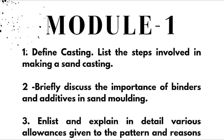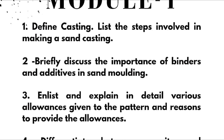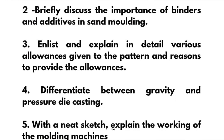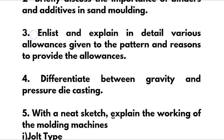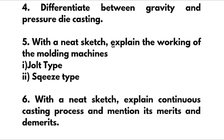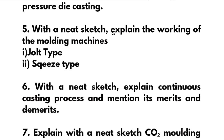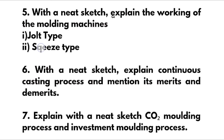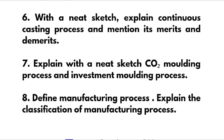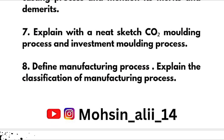In Module 1, we have: define casting and list the steps involved in making a sand casting; briefly discuss the importance of binders and additives in sand molding; list and explain in detail various allowances given to the pattern and reasons to provide the allowances; difference between gravity and pressure die casting with a neat sketch; explain the working of molding machines like jolt type or squeeze type; and with a neat sketch explain continuous casting process and mention its merits and demerits.